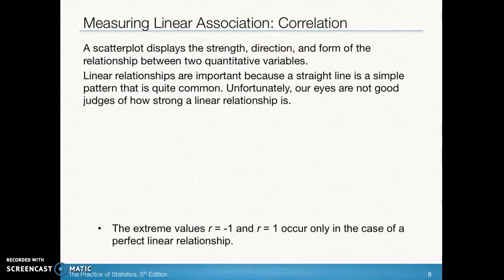When we look at the scatter plot, we want to have some way of measuring how strong the relationship is between changes in X and changes in Y — how well does the explanatory variable explain the behavior in the response variable? We're going to use what we call the correlation coefficient, denoted by R, to explain the strength of the relationship between these two variables. R is going to range between negative 1 and positive 1, where negative 1 is perfectly aligned in a negative direction, positive 1 is perfectly aligned in a positive direction, and 0 represents a very weak relationship.